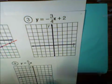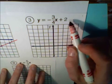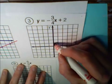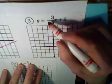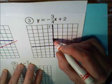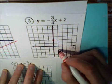So let's try another one. y equals negative 3/4x plus 2. Our y-intercept is plus 2. Our slope is negative 3/4, which means we go down 3: 1, 2, 3. And run 4: 1, 2, 3, 4.